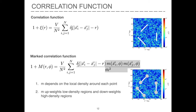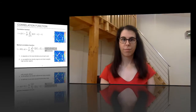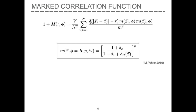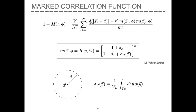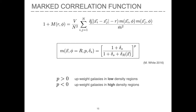Effectively, this consists in transforming the initial density field and taking the two-point correlator of the final transformed one. This statistic is what we call the marked correlation function, or marked power spectrum in Fourier space. We consider a mark with a functional form that depends on three parameters: a length r, an exponent p, and a constant delta_s. The field delta_r is the density field smoothed with a top-hat at scale r, describing the local density around a given point x. The exponent p can be positive or negative — positive values upweight low-density regions, while negative values upweight high-density regions.